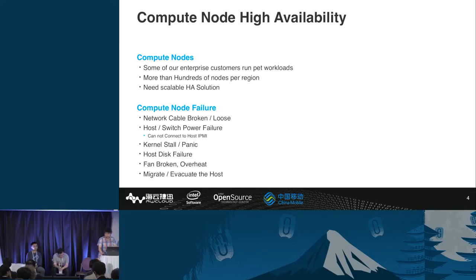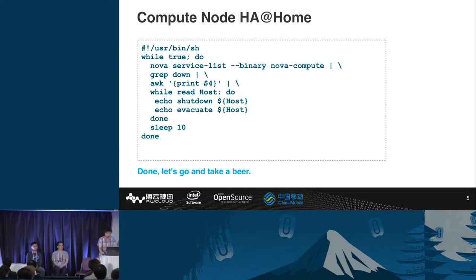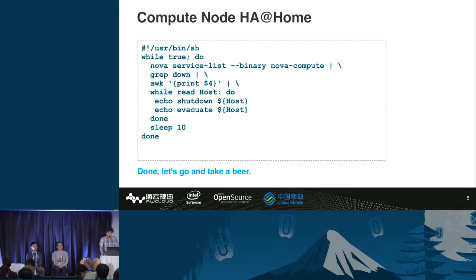At first, we thought OpenStack compute node HA was easy — you could do it at home. You run a cron job or a shell loop, use nova service-list to find all nova compute services, and if the node crashes or the management network is down, the nova service becomes down. You grab the down service instance, pick the host name, call IPMI to shut down the physical machine, and finally call nova evacuate. The solution seemed perfect and the customer and AW Cloud lived happily ever after — until one day customers called to complain we killed tenant VMs without any reason.